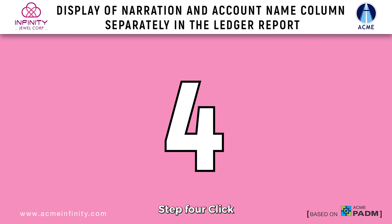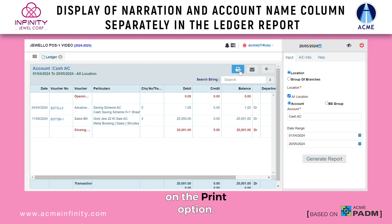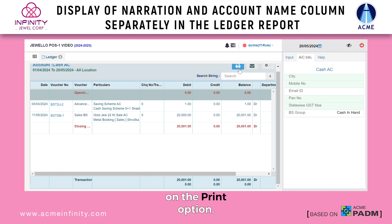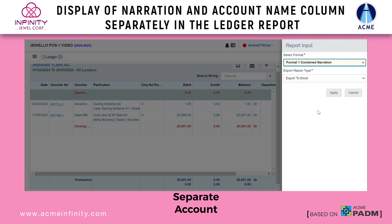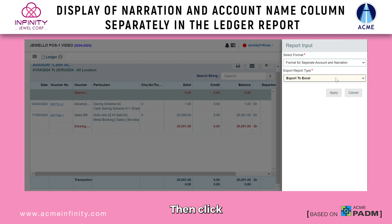Step 4: Click on the print option. Select the format that includes separate account and narration columns. Then click on the apply button.